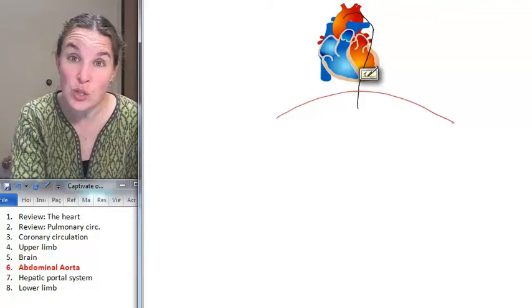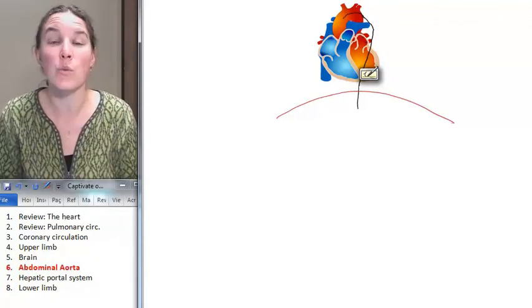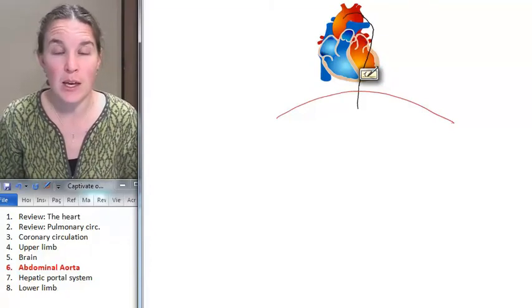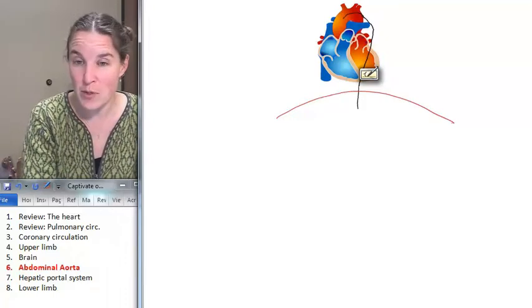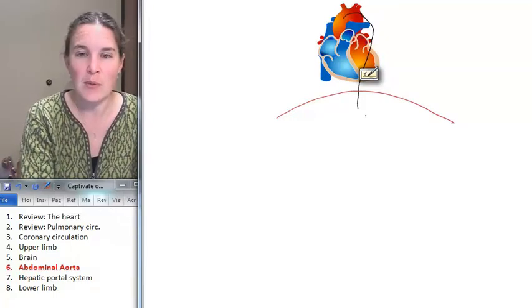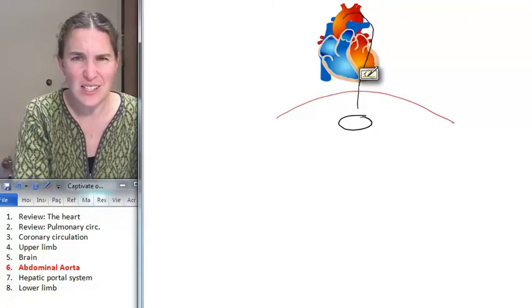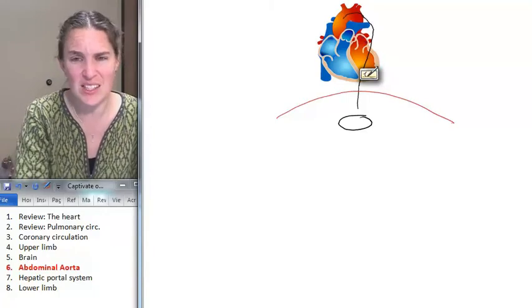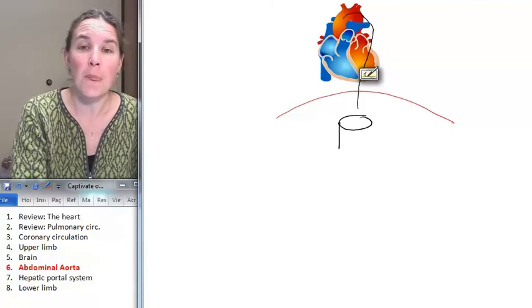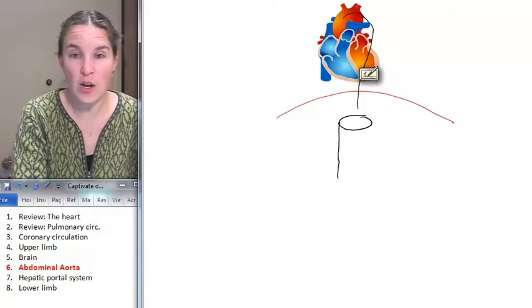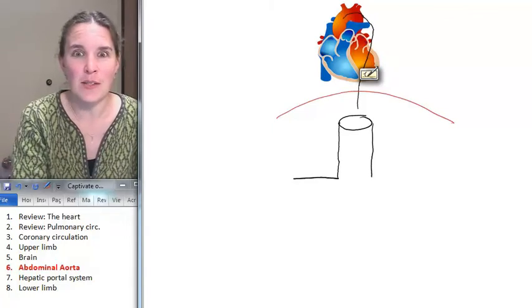So now as soon as the descending thoracic aorta passes through the diaphragm, it is now the abdominal aorta. At this stage, I'm going to change how I've been drawing everything. I'm going to draw a giant tube. You know that your descending abdominal aorta is huge. It's a huge vessel. There's a reason that we call this giant vessel the abdominal aorta man.